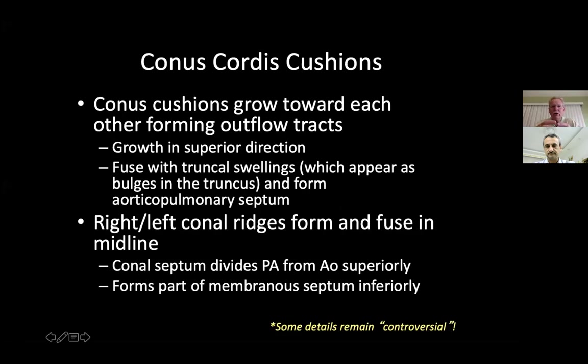The conus is going to have to divide to get an aorta that is going to be over the left ventricle, and a right pulmonary artery still attached to the conus over the right ventricle. So the aorta really loses all of the conus, and it's just a valve connected directly to the LV.